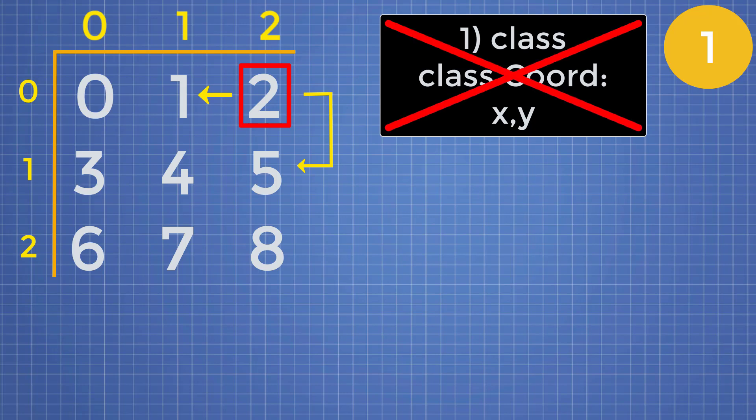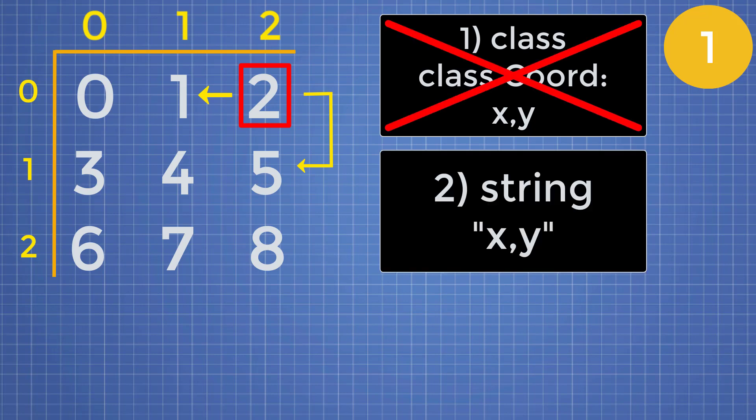Method number two of representing the coordinates is we could just use a string. We can have the x and y coordinate converted to a string, and then we have some sort of delimiter between our x and y coordinate. However, the problem with this method now is when we want to convert our x and y coordinate back to their integer values, we now have to split on this delimiter and perform the conversion from a string to integer. Once again, this involves writing a lot more code, which is just unnecessary. So we can exclude this method as well.